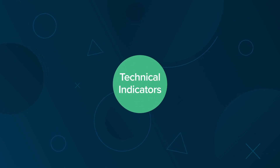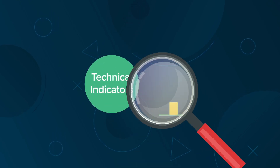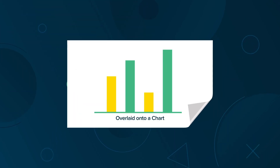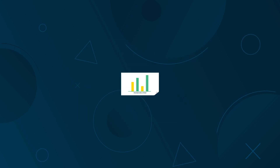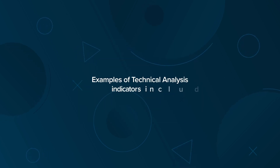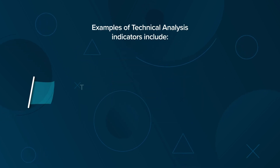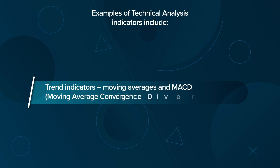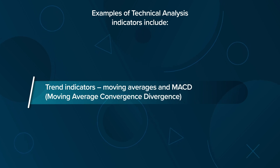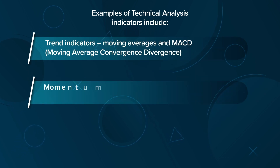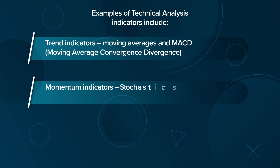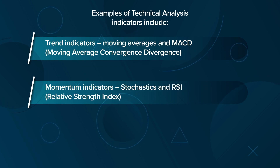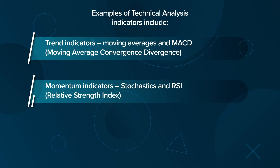Technical indicators are often based in statistics and can be overlaid onto a chart. Examples of technical analysis indicators include trend indicators such as moving averages and MACD (moving average convergence divergence), and momentum indicators such as stochastics and RSI, or Relative Strength Index.